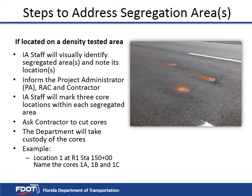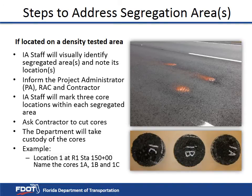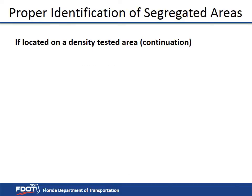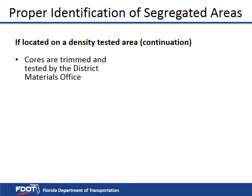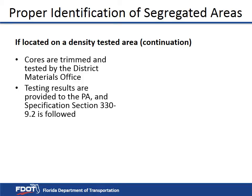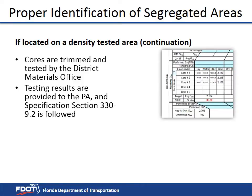Include the lane, the station, and name the cores 1A, 1B, and 1C. Arrangements can be made to deliver the cores to the District Materials Laboratory or have a Materials IA specialist pick up the cores from the QC's custody. The cores are then trimmed and tested for density by the District Materials Office. The testing results are provided to the project administrator and specification 330-9.2 is followed.